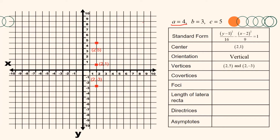The co-vertices are to the right and left of the center, 3 units away since b = 3, giving points (5, 1) and (−1, 1). The foci are collinear with the vertices, also above and below the center, 5 units away since c = 5. Thus, the foci are the points (2, 6) and (2, −4).